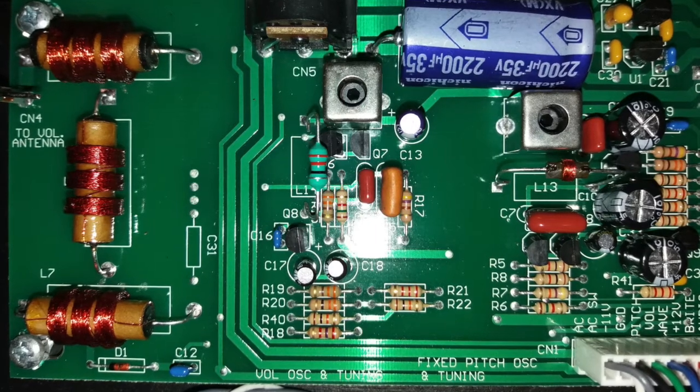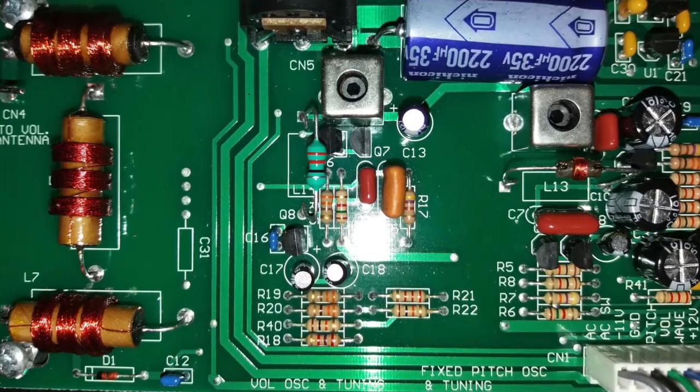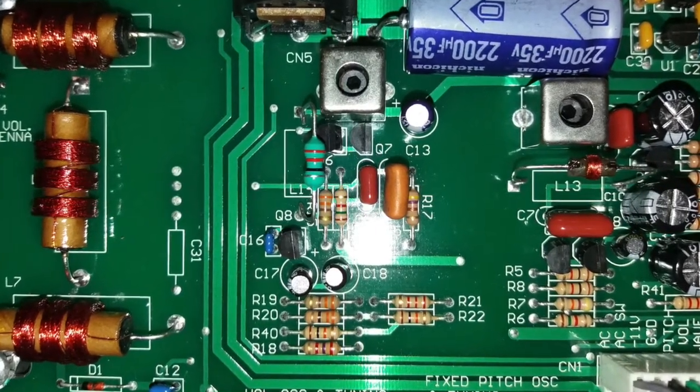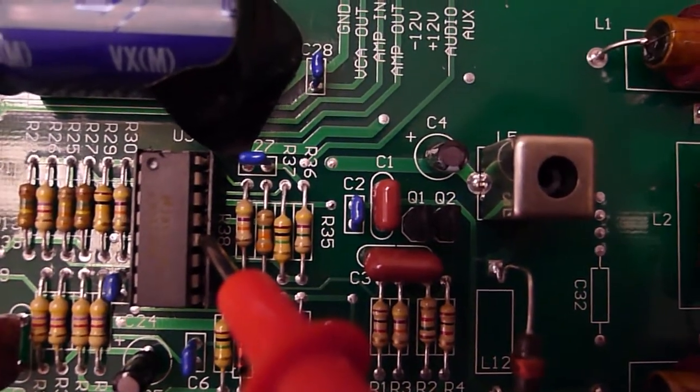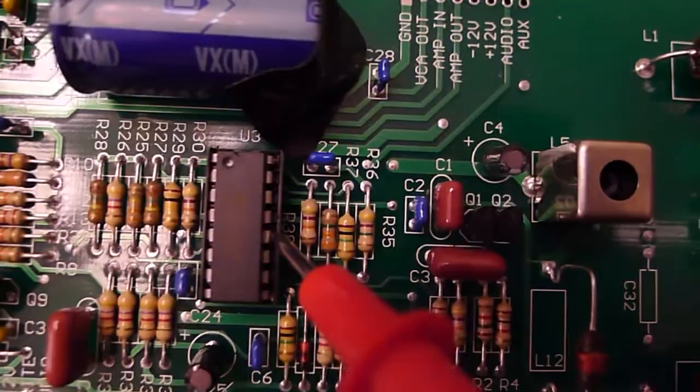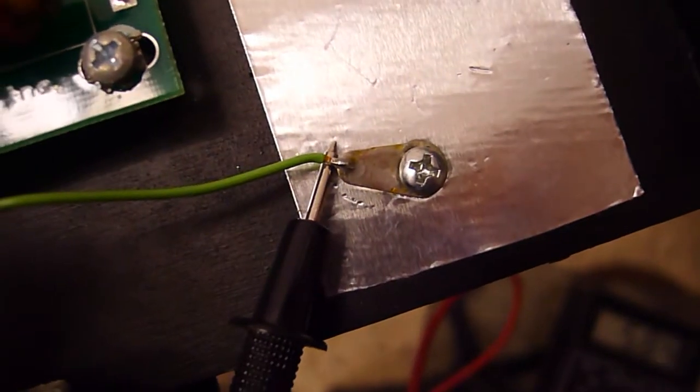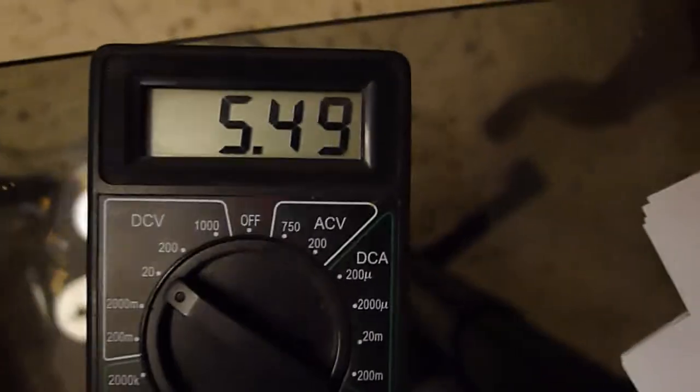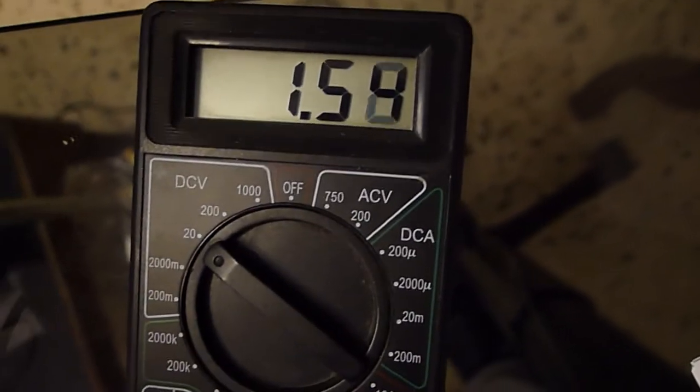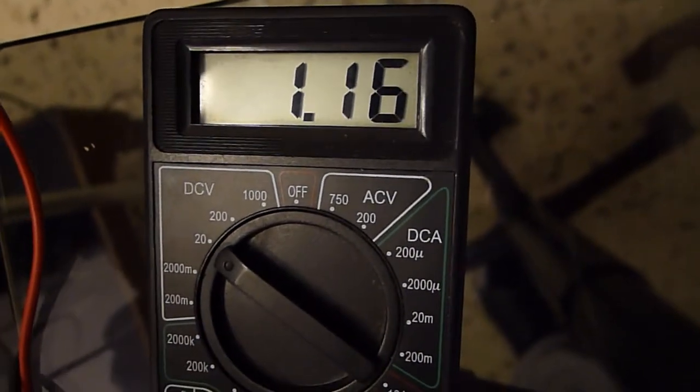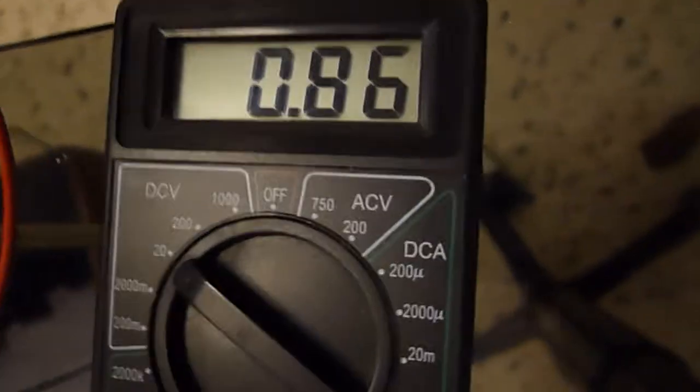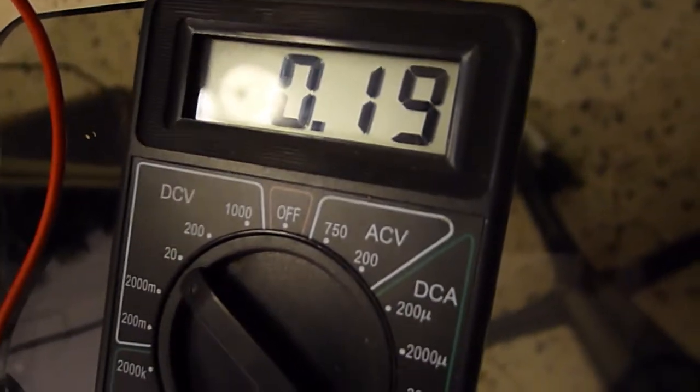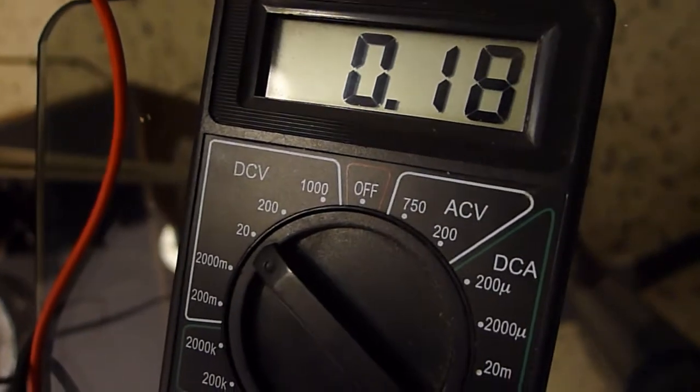To set the volume, insert the plastic tool here into the coil called L11. Then connect the voltmeter from pin 12 of U3 to ground—the green cable attached to the screw here. Turn the slug in L11 a bit counterclockwise, then slowly turn it clockwise. The voltage begins to rise from minus 12 volts to zero. Stop there.